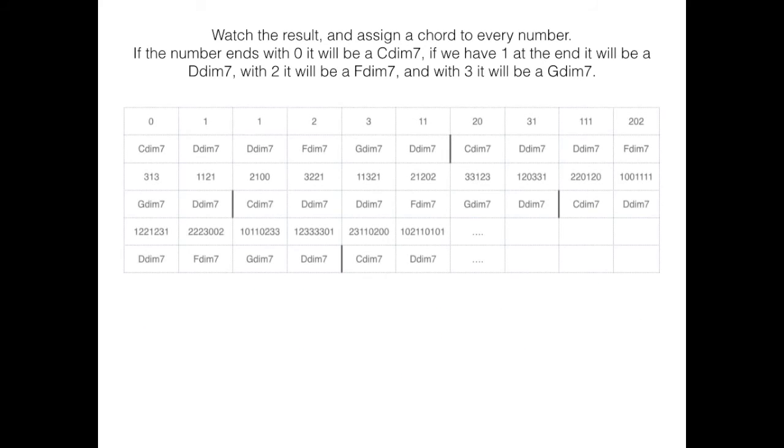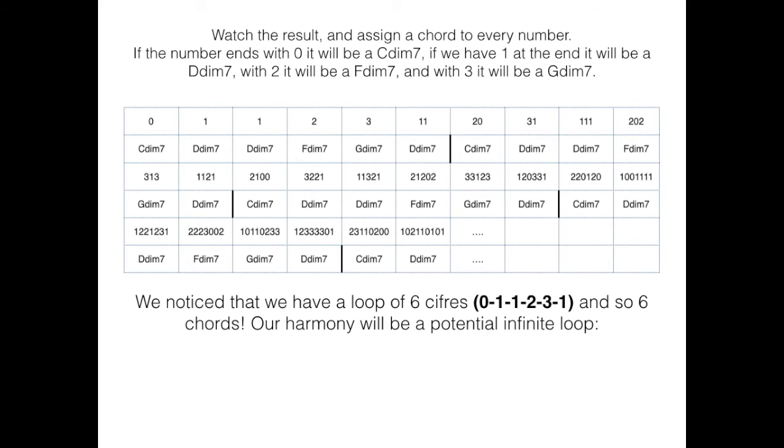Watch the result in a sonic chord to every number. If the number ends with 0, it will be a C diminished 7th. If we have 1 at the end, it will be a D diminished 7th. With 2, it will be an F diminished 7th. And with 3, it will be a G diminished 7th. We notice that we have a loop of 6 cyphers: 0, 1, 1, 2, 3, 1. And so 6 chords. Our harmony will be a potential infinite loop.